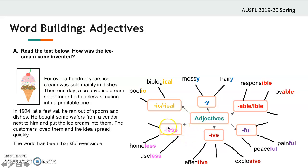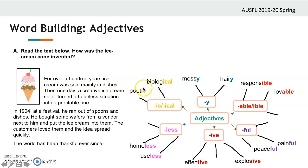Then we have -less, which means 'without': 'home' becomes 'homeless,' 'use' becomes 'useless.' And we have -ic: 'biology' becomes 'biological,' 'poet' becomes 'poetic.' This suffix gives the meaning of relation — so 'biological' means related to biology.